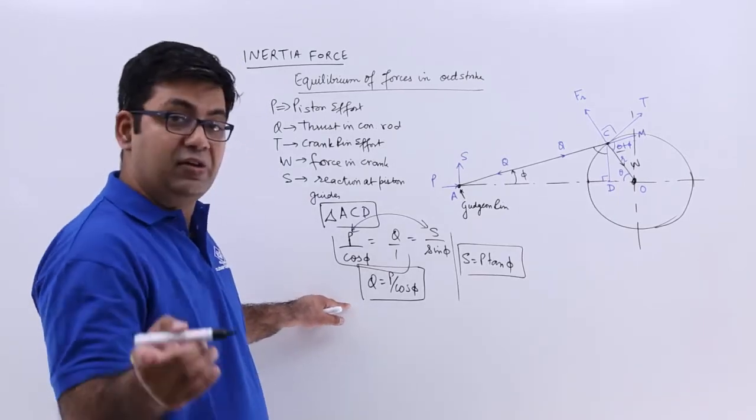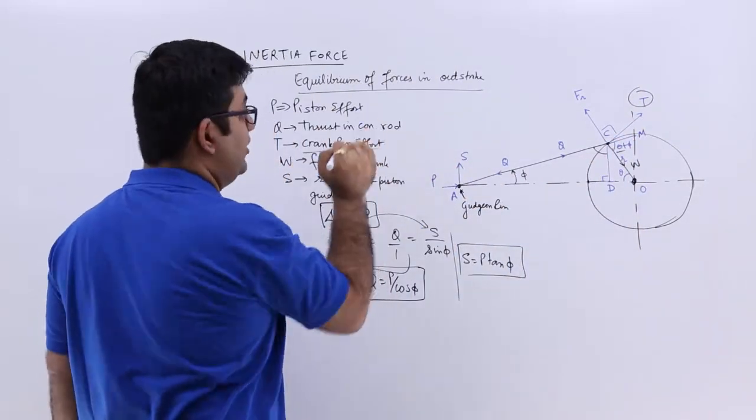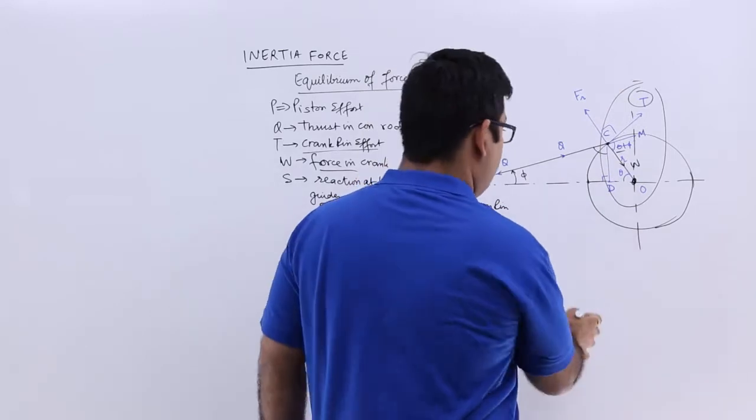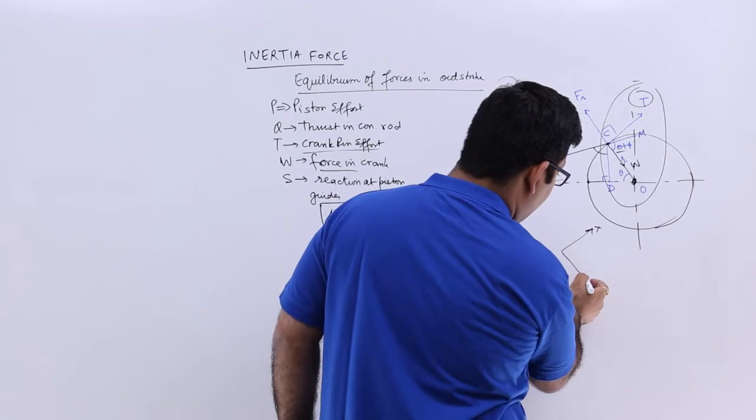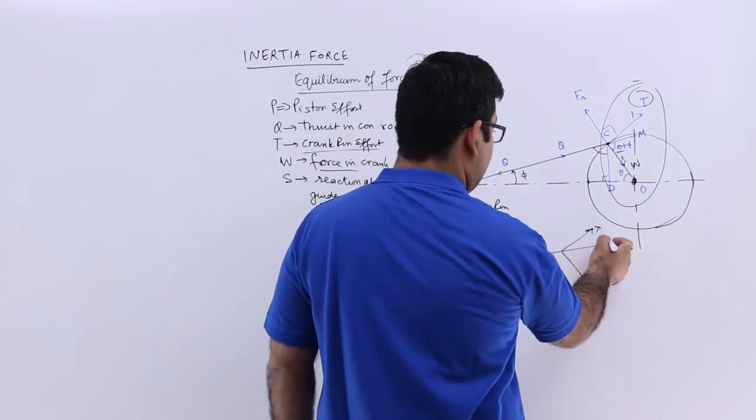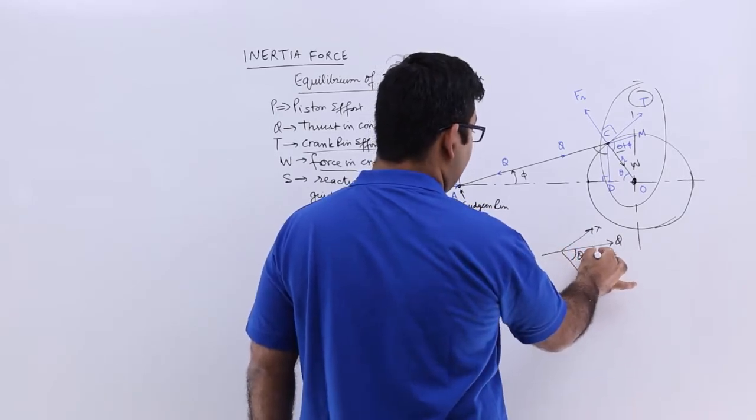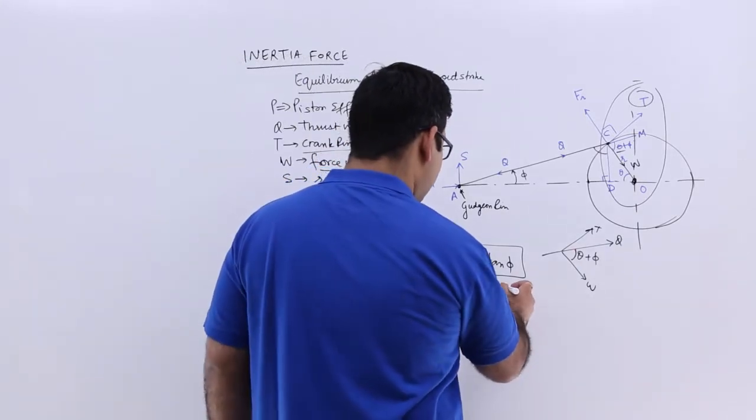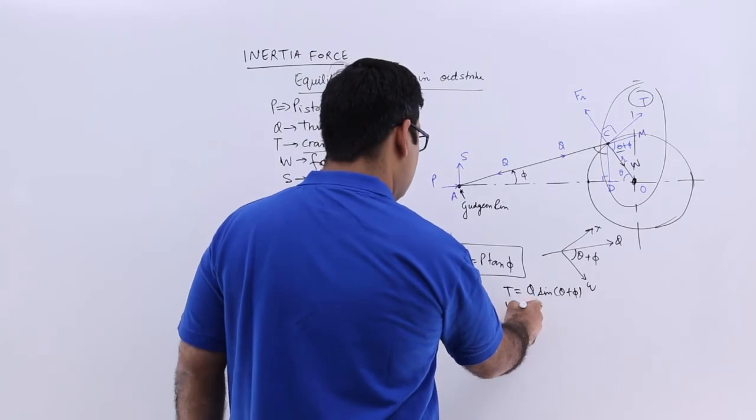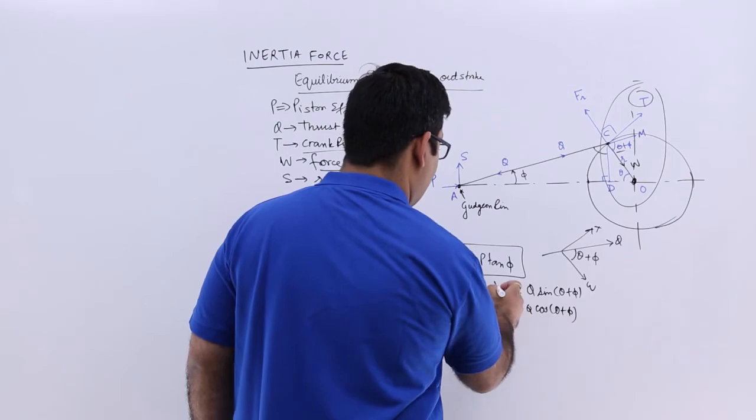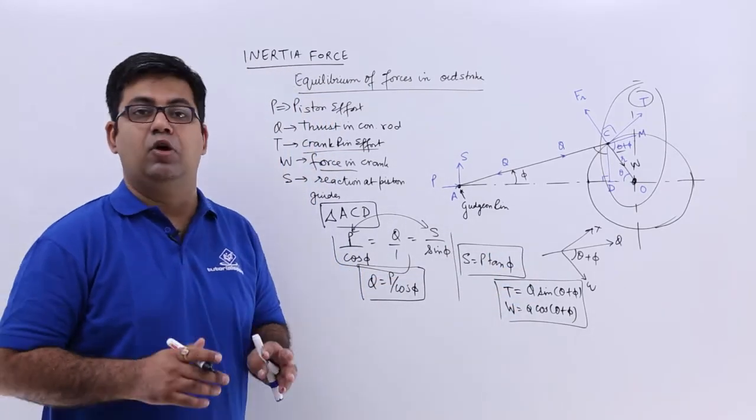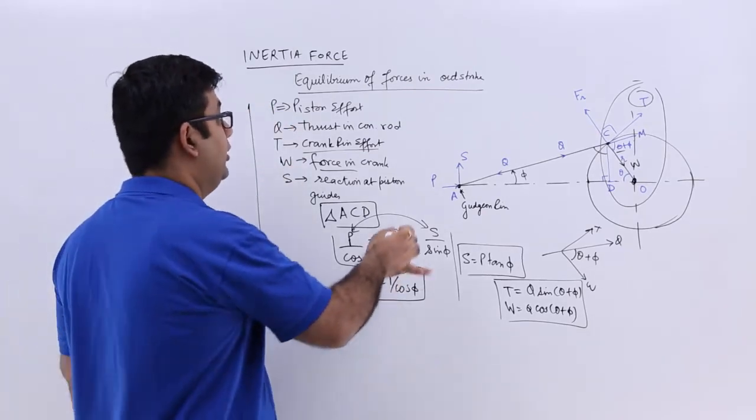So then we have these two forces, T that is the crankpin effort and the force in crank. If you look at this very closely and if I redraw this portion, you have T like this and then you have at 90 degrees W, and this is the line of action of Q which is at theta plus phi angle to the line of action of W. So I can say that T equals Q into sin of theta plus phi, and W equals Q into cos of theta plus phi. So this is how you can calculate T and W in terms of the thrust in the connecting rod. So these are the forces and the equilibrium of the forces during the outstroke.